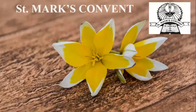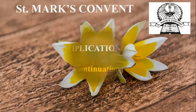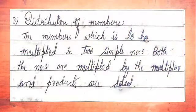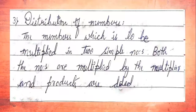Hello children, welcome to Class 4 Mathematics. This is a continuation of Unit 5: Multiplication. Today we continue with the properties of multiplication — this is the third one: distribution of numbers. The numbers to be multiplied are split into two simpler numbers, both are multiplied by the multiplier, and the products are added.